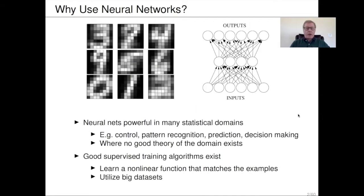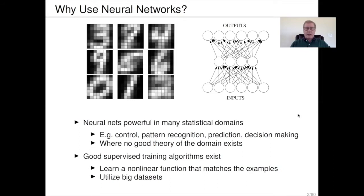We know that neural networks are very good in statistical domains such as image recognition, character recognition, control tasks, prediction, and time series data — in decision making in general domains where no good theory of the domain exists. We can use supervised learning algorithms from collected examples, and the network learns a nonlinear model of the data, which can be very useful utilizing the big data that exists.